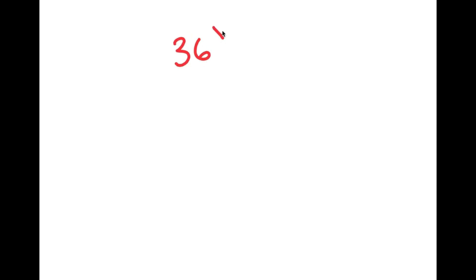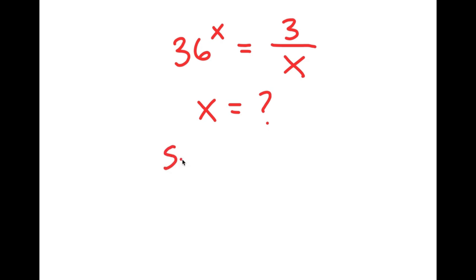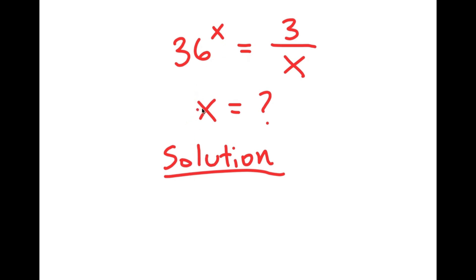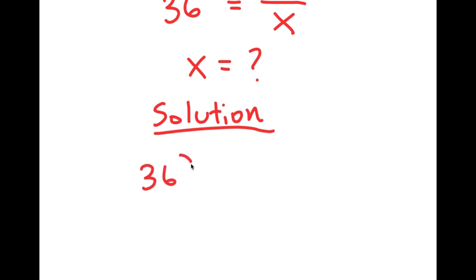In today's video, I'm going to be solving the equation 36 to the power of x is equal to 3 over x. My only variable in this equation is x, so that's what I'm going to be solving for. My equation is 36 to the power of x is equal to 3 over x.